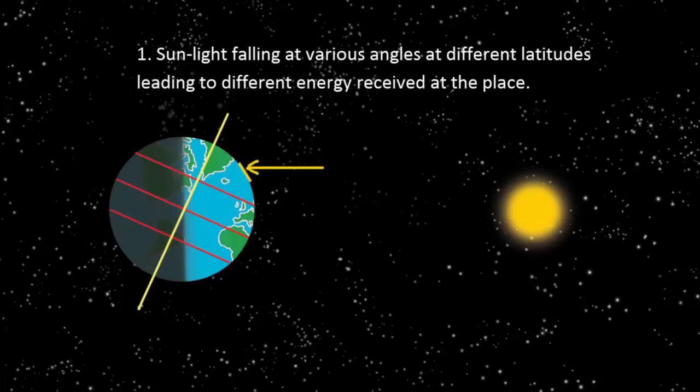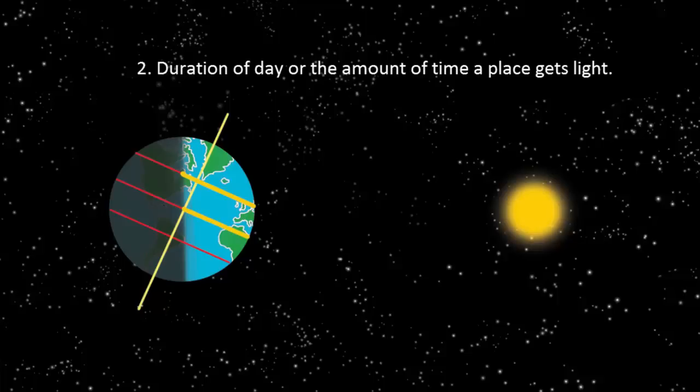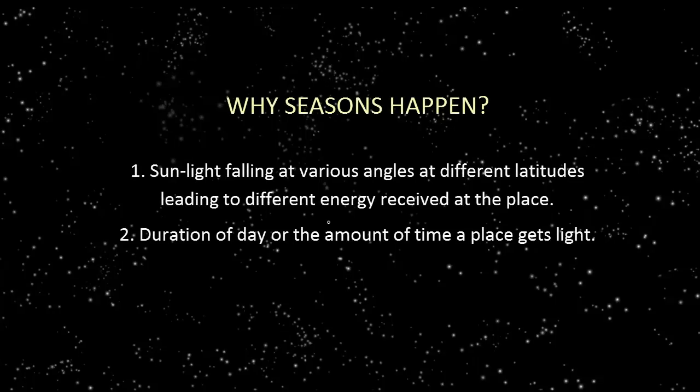Sunlight falling at various angles at different latitudes leads to different energy received at the place, and the duration of the day, or the amount of time a place gets light. So I hope you enjoyed learning the real reason behind the seasons. Thank you.